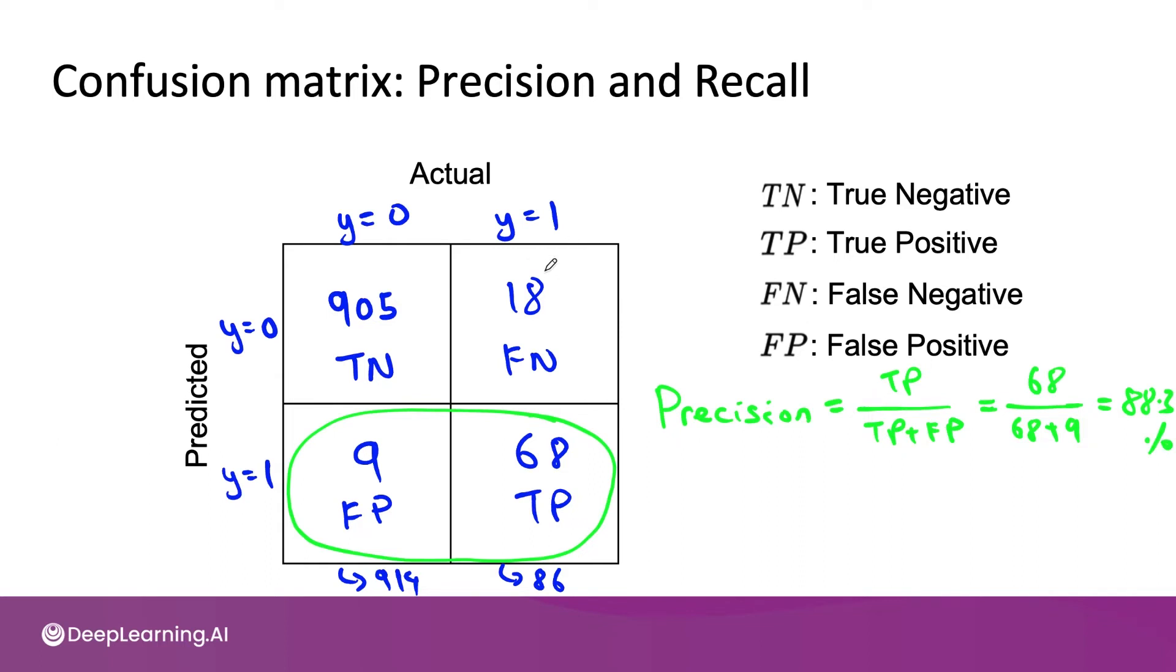In contrast, the recall, of all the examples that were actually positive, what fraction did your algorithm get right? So recall is defined as true positives divided by true positives plus false negatives, which in this case is 68 over 68 plus 18, which is 79.1%.